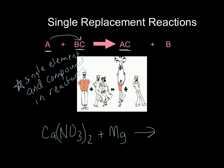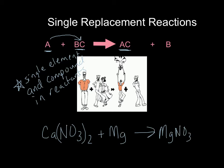Back to our example: we have calcium nitrate, Ca(NO3)2, plus magnesium — a compound and a single element. Magnesium is a metal, so it's going to take the place of the other metal, calcium. Writing the compound first: Mg with NO3. Checking the charges — magnesium has a plus-two charge, nitrate has a minus-one charge — so we get Mg(NO3)2. Plus the leftover calcium, written by itself. That's a single replacement reaction.